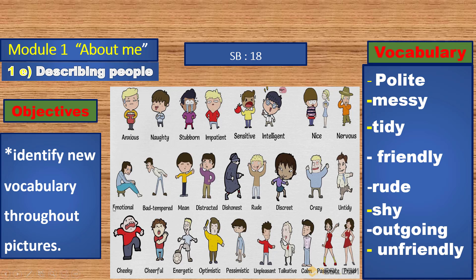The objectives of our lesson today: Number 1 — identify new vocabulary through pictures. Let's look at these words: anxious, naughty, stubborn, impatient, sensitive, intelligent, nice, nervous, polite, messy, tidy, friendly, rude, shy, outgoing, unfriendly.